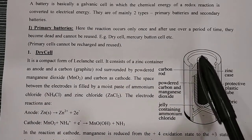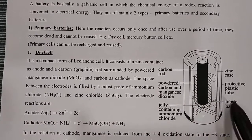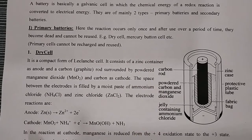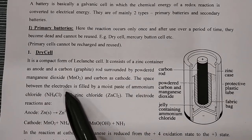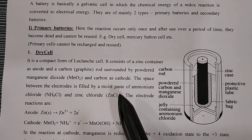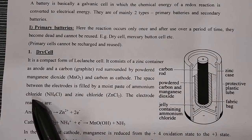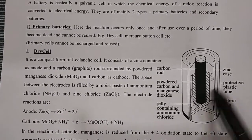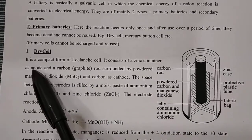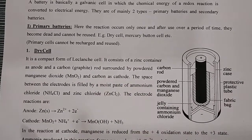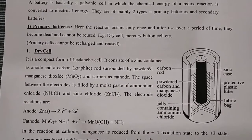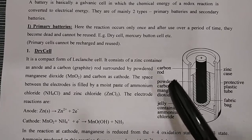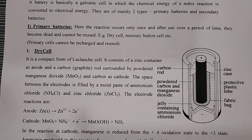The space between the electrodes is filled with a moist paste of ammonium chloride (NH4Cl) and ZnCl2. Now the chemical reactions: at the anode, zinc behaves as anode, and anode means oxidation, so Zn gives Zn²⁺ plus 2 electrons. The graphite, carbon powder, and MnO2 behave as cathode, so at the cathode: MnO2 plus NH4⁺ plus electron gives MnO(OH) plus ammonia gas is released.